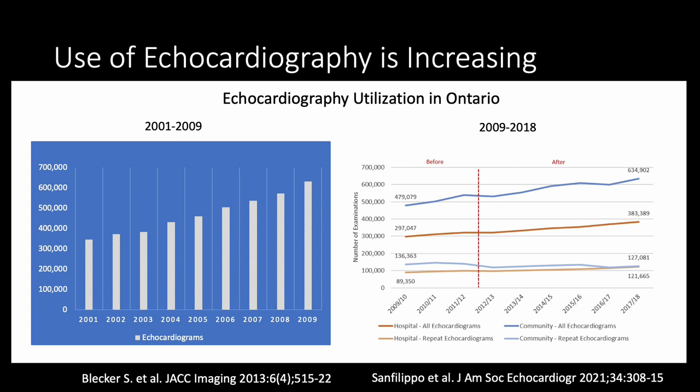Why do we need artificial intelligence? The number of echocardiographic studies performed worldwide is increasing. Here are the numbers for Ontario: in 2001 about 350,000 studies were being done per year, and in 2018 almost a million studies are being done. Despite this, the number of people who read these studies has actually not increased significantly.